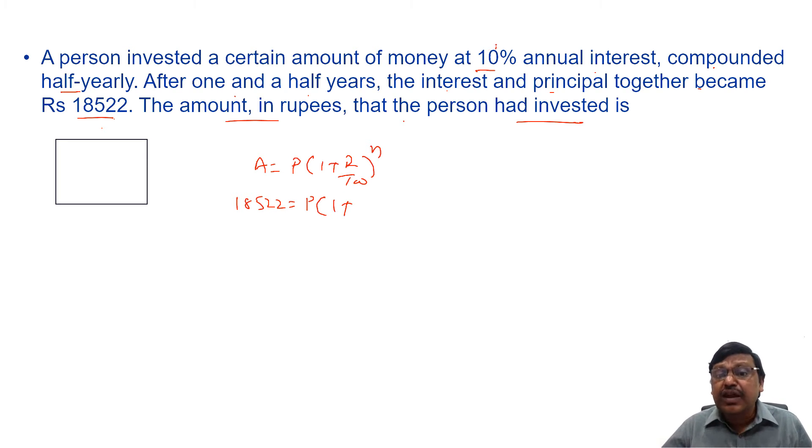1 plus rate of interest is 10% per annum annual interest, but here it is compounded half yearly, means for full year if it is 10%, for half year it will be 5%.